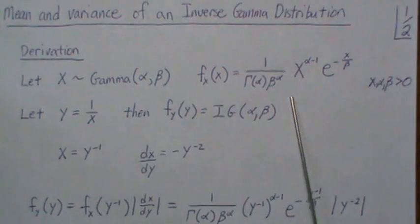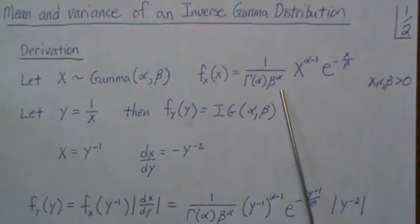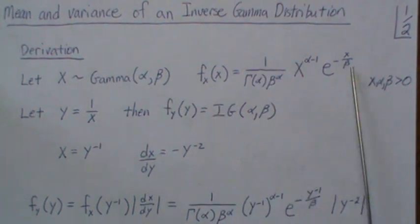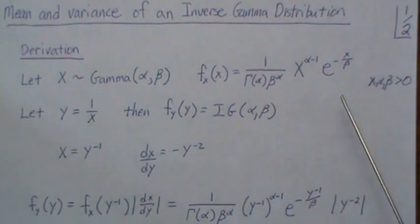The density is written like this. Now notice that the beta is in the denominator. Some people put the beta in the numerator, and that's fine also.